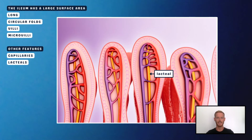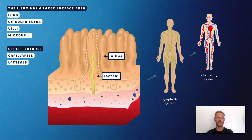In addition to capillaries, each villus contains a single vessel called a lacteal, which is involved in the absorption of fats. Many of the fatty acids and glycerol molecules from the digestion of triglycerides reform in the epithelium of the villi into fats. These fats move into the fluid in the lacteals, which flows into the lymphatic system, and then eventually into the blood.